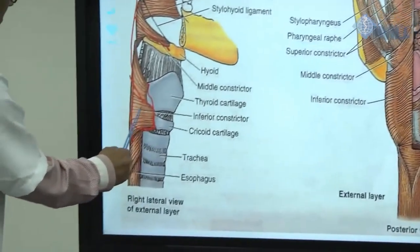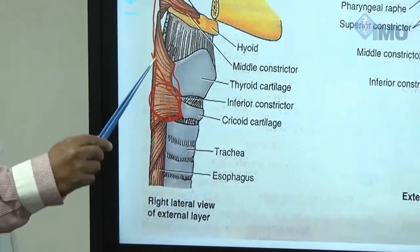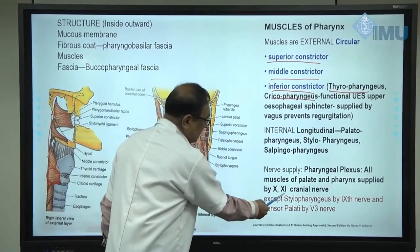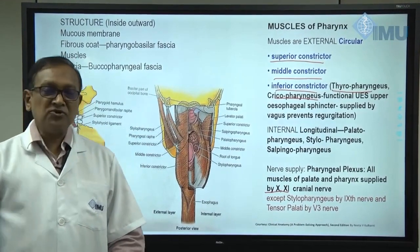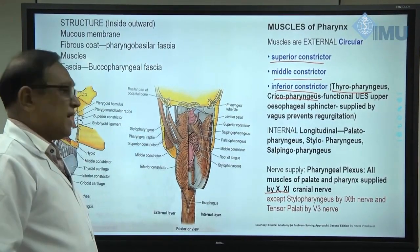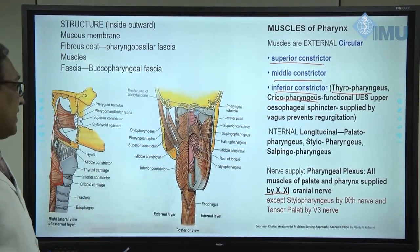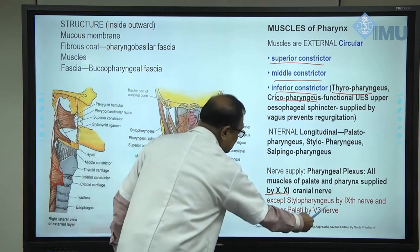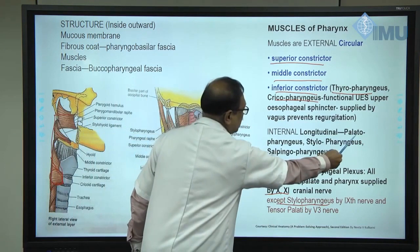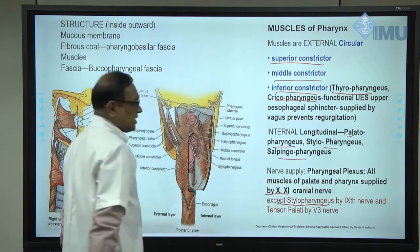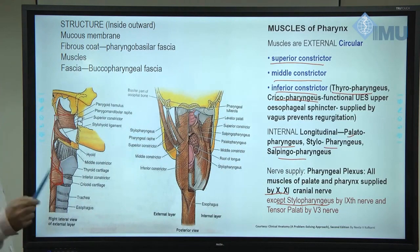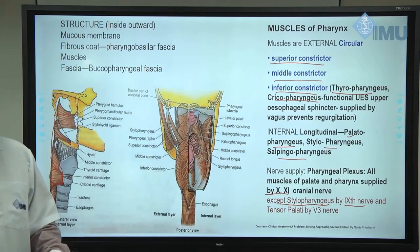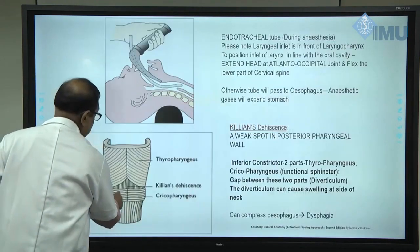All the muscles of the pharynx are innervated by the vagus nerve — the 10th cranial nerve — with one important exception: stylopharyngeus, which is supplied by the 9th cranial nerve (glossopharyngeal nerve). The vertical muscles include palatopharyngeus, stylopharyngeus, and salpingopharyngeus. Neuromuscular incoordination of the upper esophageal sphincter can produce dysphagia in the elderly, and this innervation is of clinical importance.